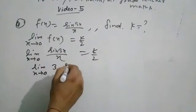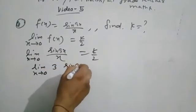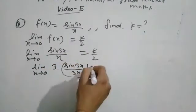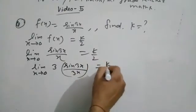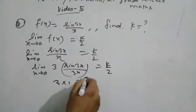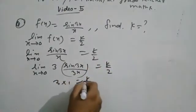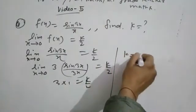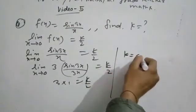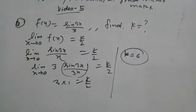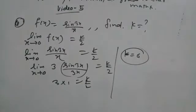Multiply and divide by 3, so we get 3 times sin(3x)/(3x), which gives 3 into 1 equal to k/2, therefore k equals 6. The value of k is 6. Next question.